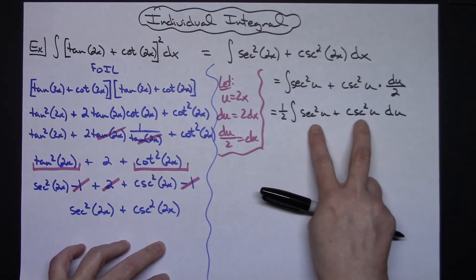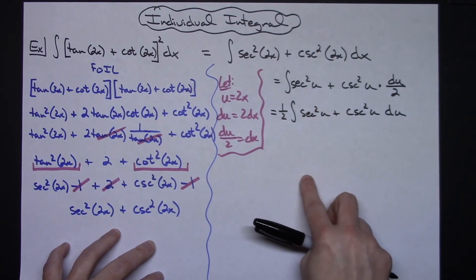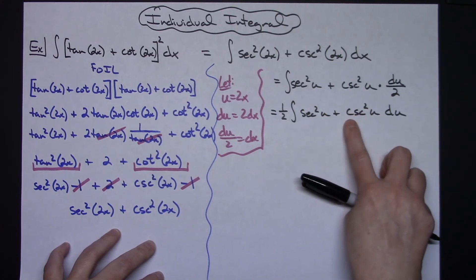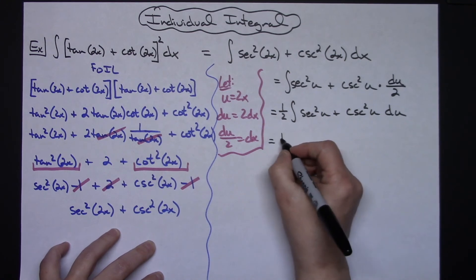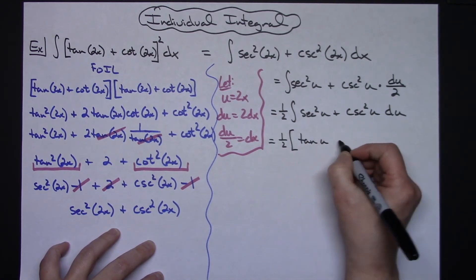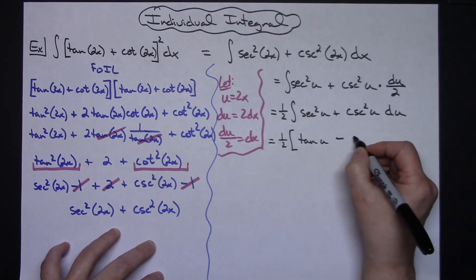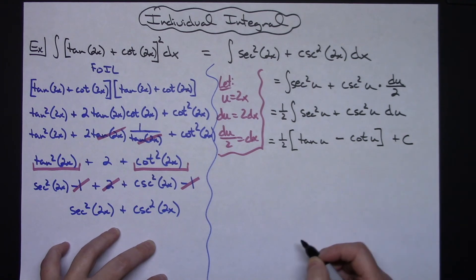I am now to the place where I can integrate and I can integrate both of these pretty easily. Hopefully you have them memorized. The integral of secant squared is going to be a tangent. The integral of the cosecant squared is going to be a negative cotangent. Okay, so I'll have the 1 half that's out in front and I'll have a tangent u here and then minus the cotangent of u and then with a plus c at the end.